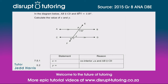Hey guys, it's Jed here from Disrupt Tutoring, and as always it's such a pleasure to join you today. We're going to deal with some geometry of straight lines, and without further ado I'm going to get straight into the question. Now, they've asked us: in the diagram below, AB is parallel to CD — and they've already noted that for us.